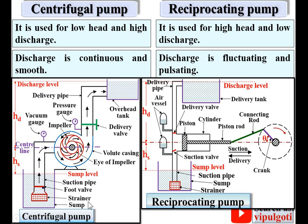Looking at the figures of centrifugal pump and reciprocating pump: in the centrifugal pump, the impeller rotates continuously, so the flow is continuously flowing and you get a continuous discharge. Whereas in the reciprocating pump, first suction occurs and then discharge, giving pulsating flow. The piston has accelerating and decelerating motion, which causes the fluctuating discharge.